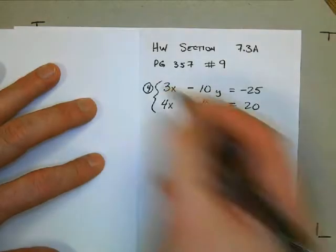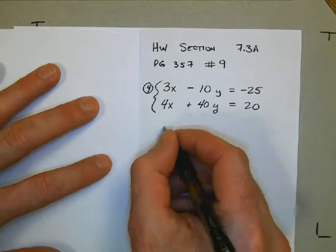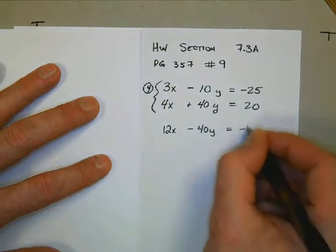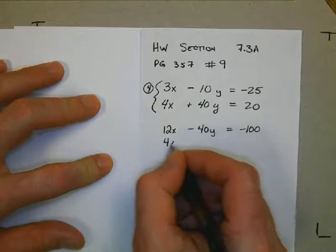So my new resulting first equation is 12x minus 40y equals negative 100. My second equation is not going to change since I don't have to multiply by anything.